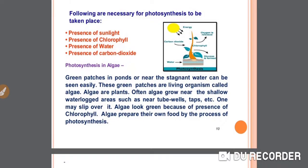Next is photosynthesis in algae. Green patches in ponds or near stagnant water can be seen easily. These green patches are living organisms called algae. Algae are plants that often grow near shallow waterlogged areas such as near tubewells, taps, etc. One may slip over them. Algae look green because of the presence of chlorophyll, and they prepare their own food by the process of photosynthesis. That is why algae are able to form their own food — they have chlorophyll, the necessary raw material for photosynthesis.